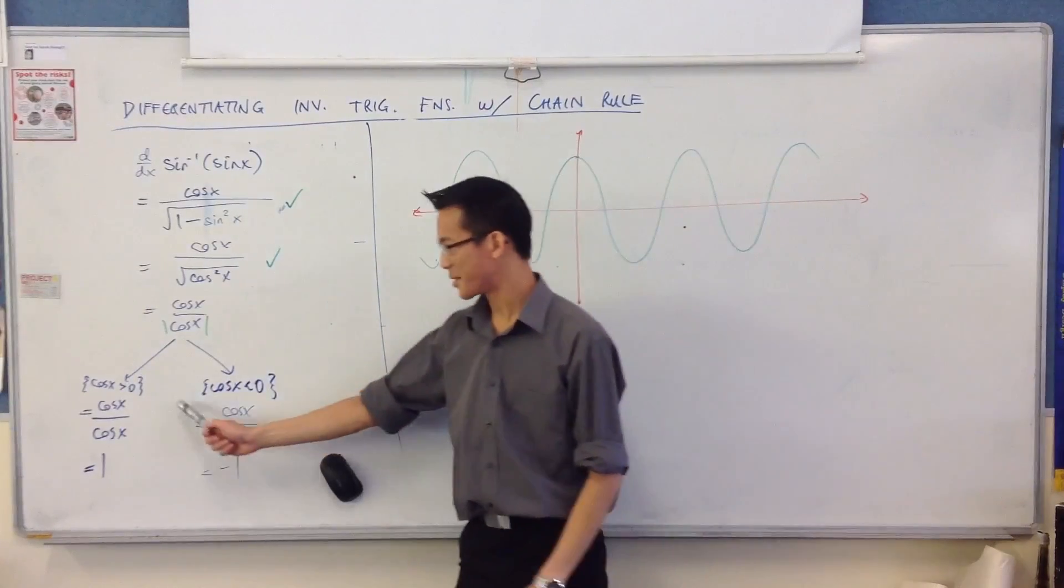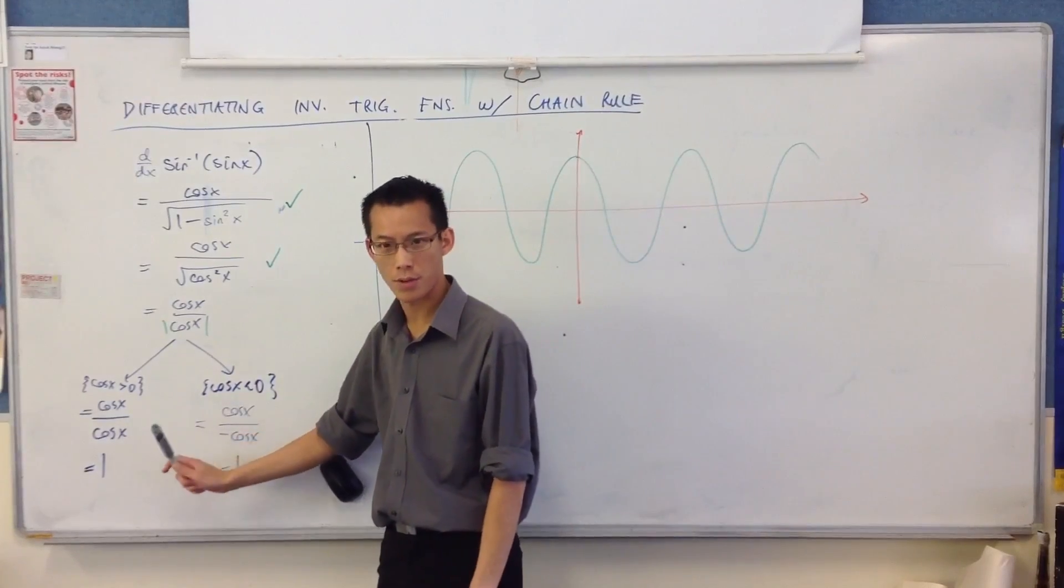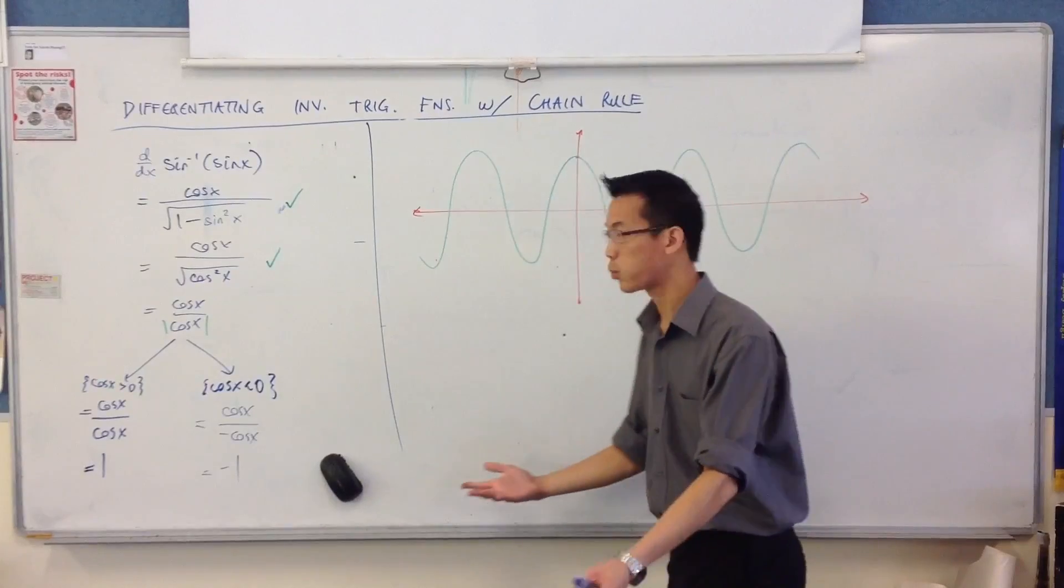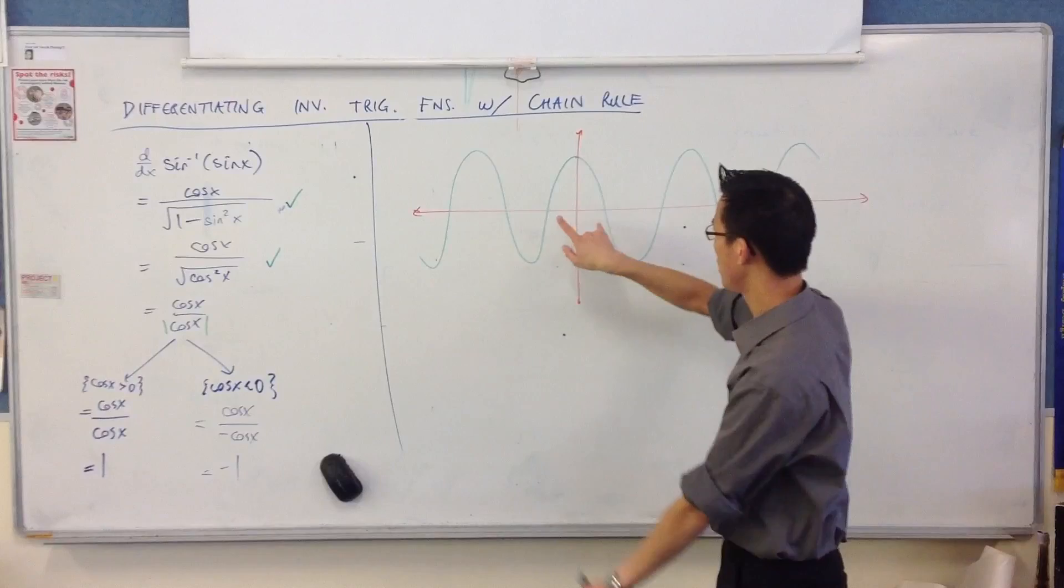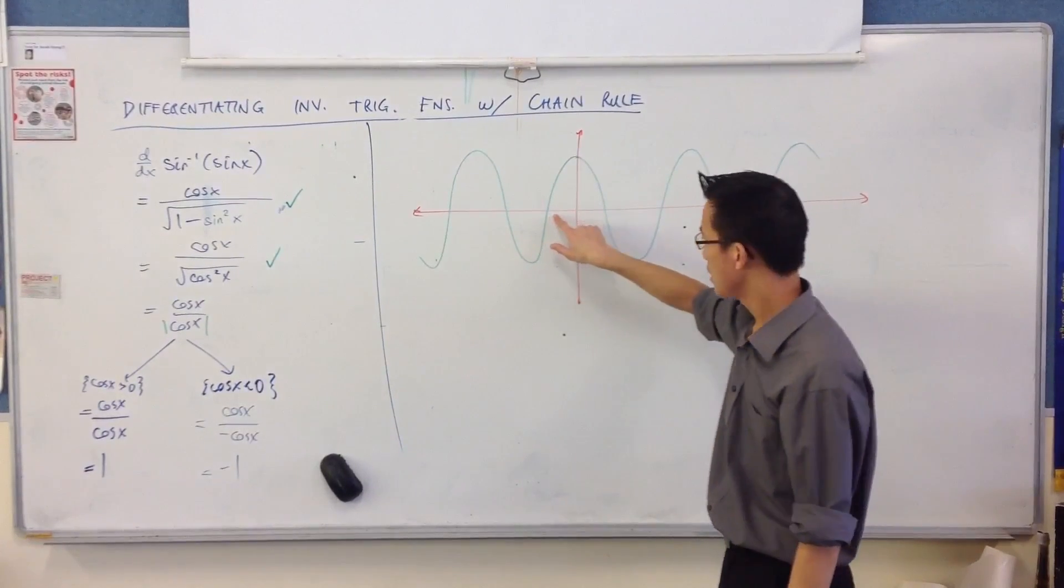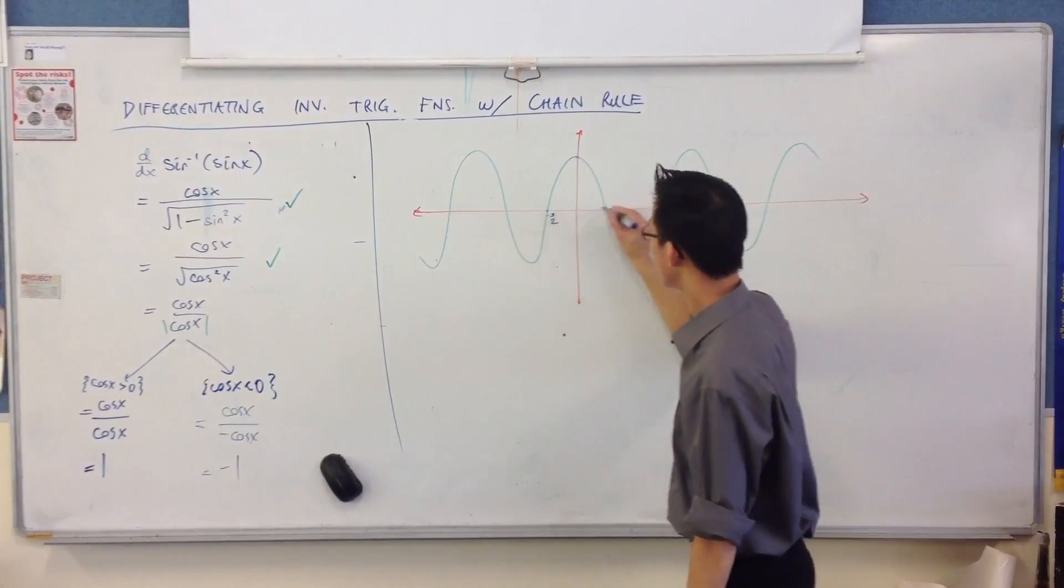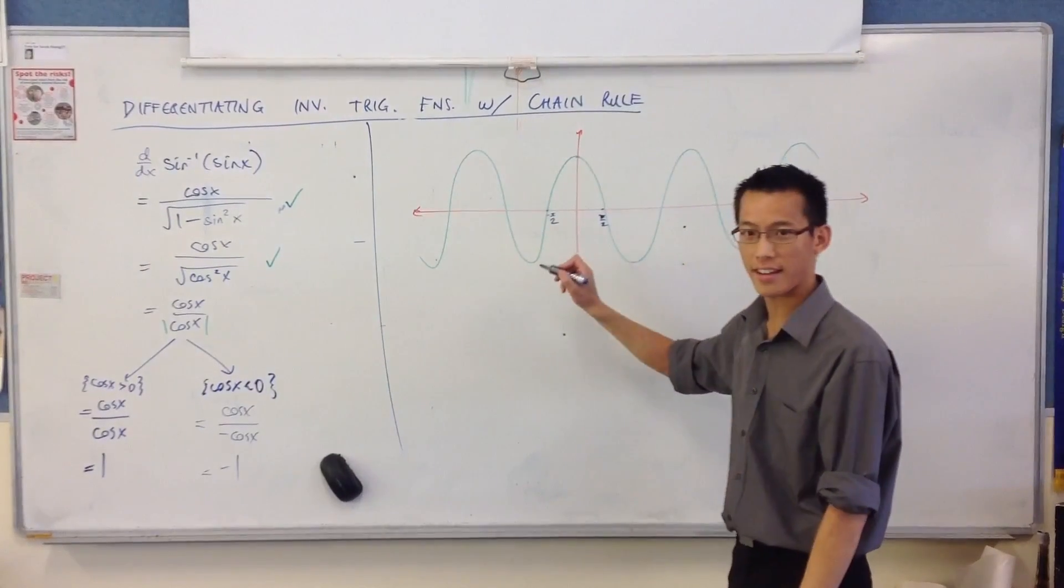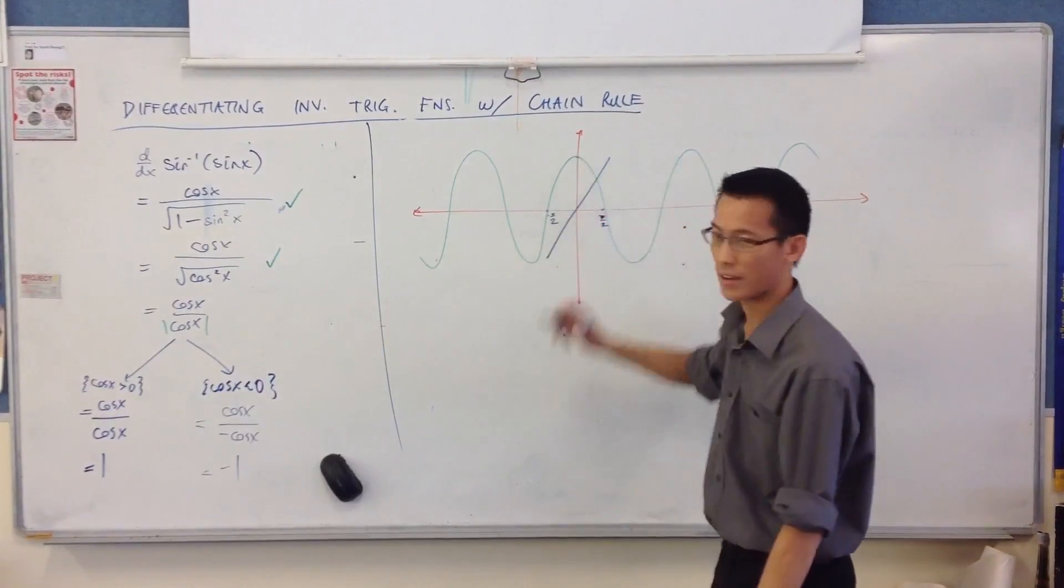Now, what's this telling us? This graph, its derivative. When cosx is positive, the derivative is one. So it's increasing. So look at all the places where cosx is greater than zero. So for instance, right in between here, what's this domain? What are the two values on either side? Yeah. This is minus pi on two to pi on two. Which is what we got before. So that's why you're getting it increasing during this domain. So it's looking something like this.